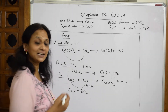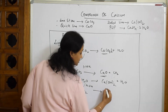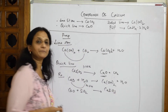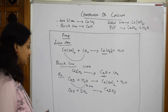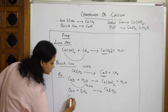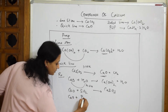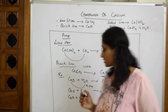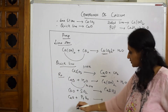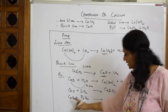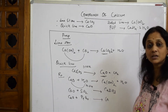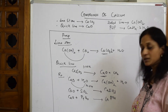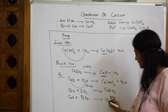Next, if calcium oxide reacts with silica (sand), it forms calcium silicate, which comes out as a slag. This is relevant in the metallurgy of iron. Similarly, if calcium oxide reacts with P₄O₁₀ (phosphorus pentoxide), a calcium phosphate compound is formed.